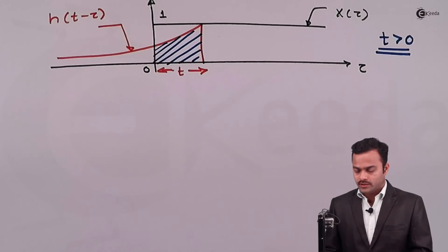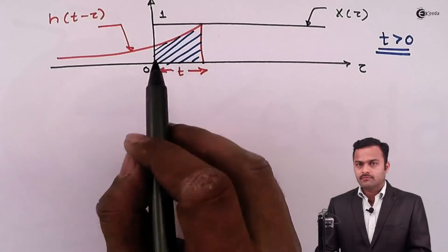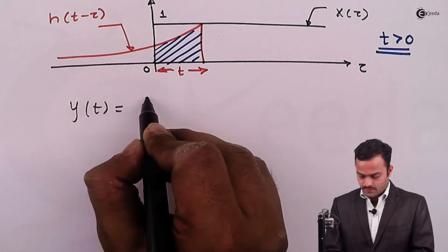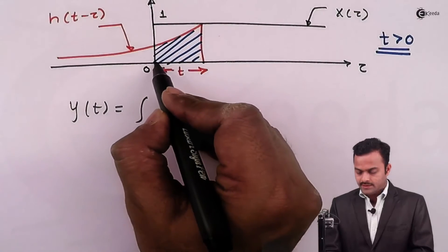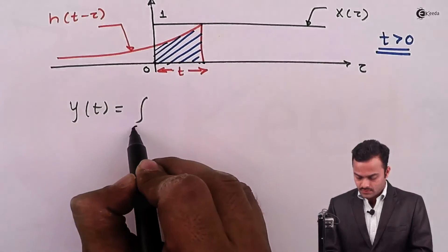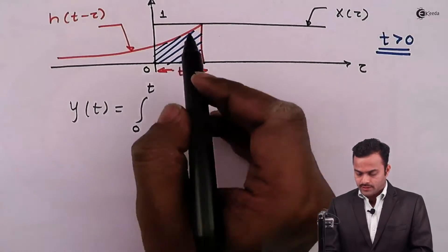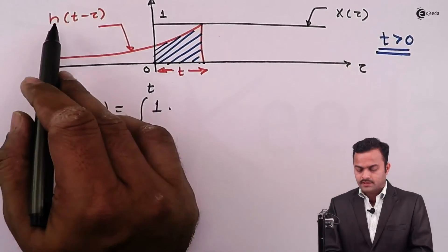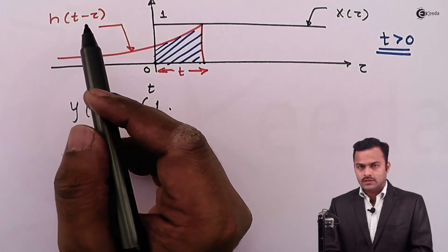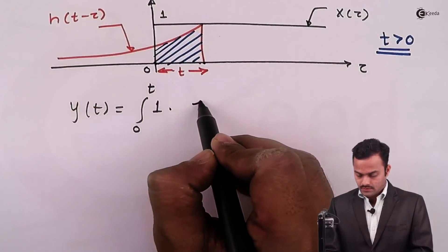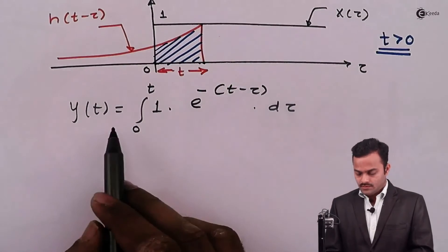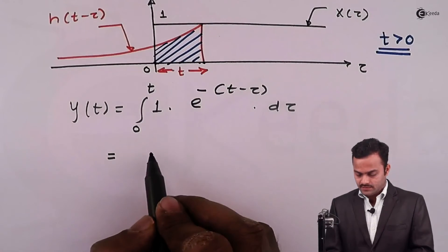We are interested in knowing the limits where the common area is formed. Since some area is common, y(t) = integral with limits from zero to t. The value of x(tau) is one, and since h(tau) = e^(-tau), we get h(t - tau) = e^(-(t - tau)). So the integrand is e^(-(t - tau)) d tau.